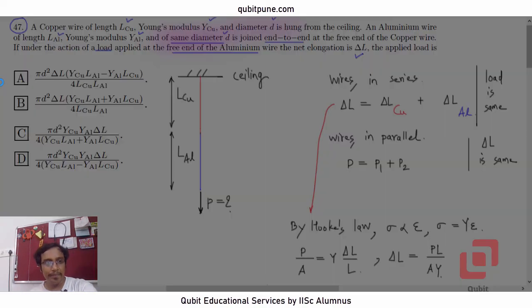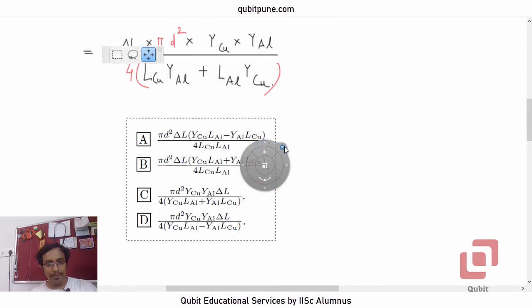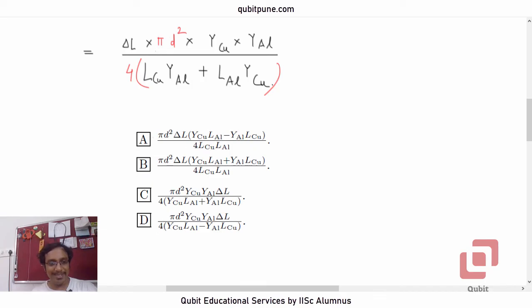All of them have four in their denominator. So, that is not going to be of much help. Let's start with the denominator, which has an addition here. L_Cu Y_Al plus L_Al Y_Cu. Let's continue with C and look for the matching of the other terms. Does it have delta L? It has. Does it have pi d squared? It has. Does it have Y_Cu Y_Al? Yes, it has. And denominator is also matching. And because we know that only one option is going to be correct, the correct option is C.